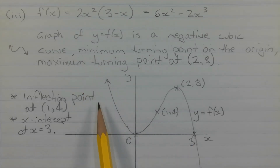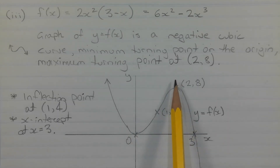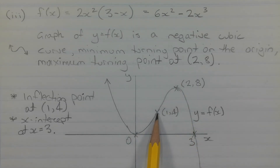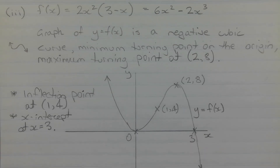Here is the graph of y = f(x): a negative cubic curve with a minimum turning point at the origin, a maximum turning point at (2, 8), a point of inflection at (1, 4), and an x-intercept at x = 3.